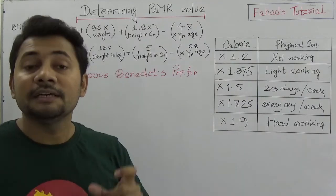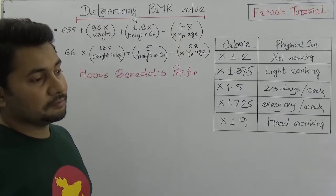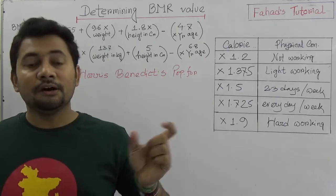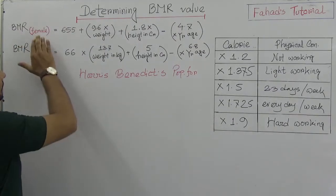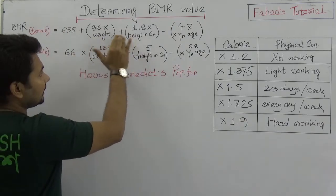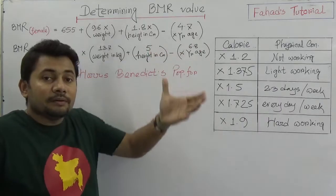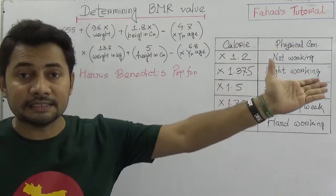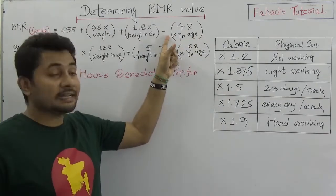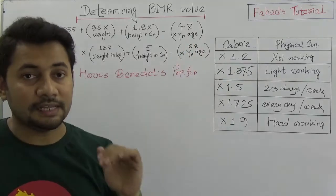So how do we determine one person's BMR in case of male and female? In case of female we start with 655, then add weight and height, but we must deduct age. When someone is older — 60, 70, 80 years — the BMR will be smaller comparatively. In young age the BMR is higher, but in old age it is comparatively lower.